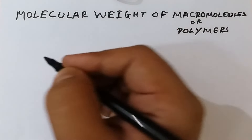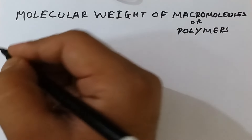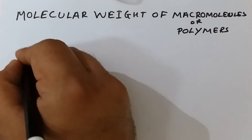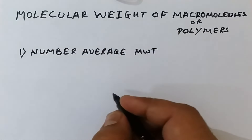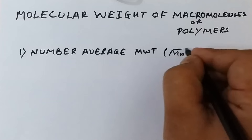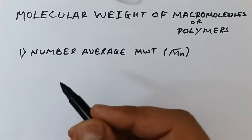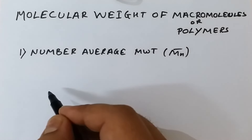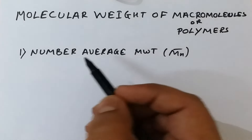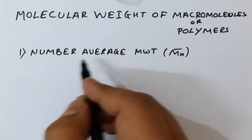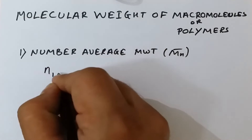There are four different methods to express the molecular weight of the polymer, which we will discuss one by one. The first two methods are the most commonly used. The first notation of molecular weight is number average molecular weight, generally represented by Mn bar. Number average molecular weight is defined as the total weight of the polymer divided by the total number of molecules that are present.